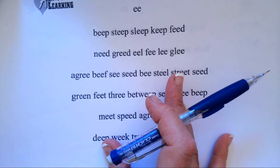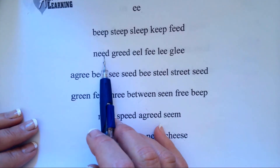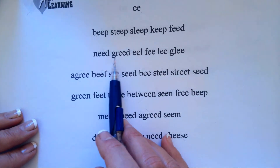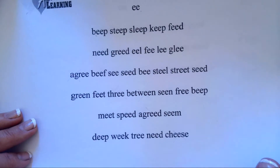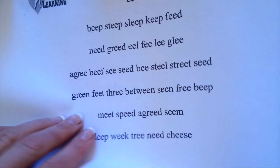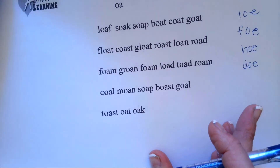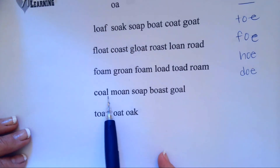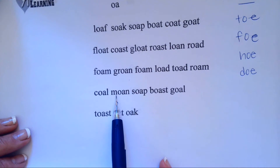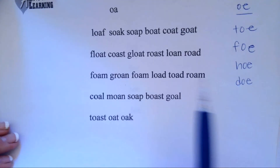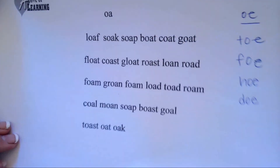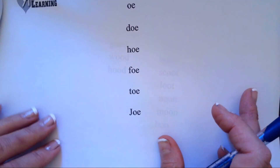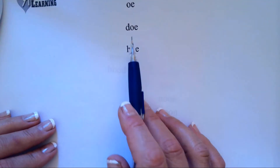E-E makes e. N-E-E-D, need. C-R-E-E-D, greed. O-A makes o. C-O-A-L, coal. M-O-A-N, moan. O-E makes o. D-O-E, doe.